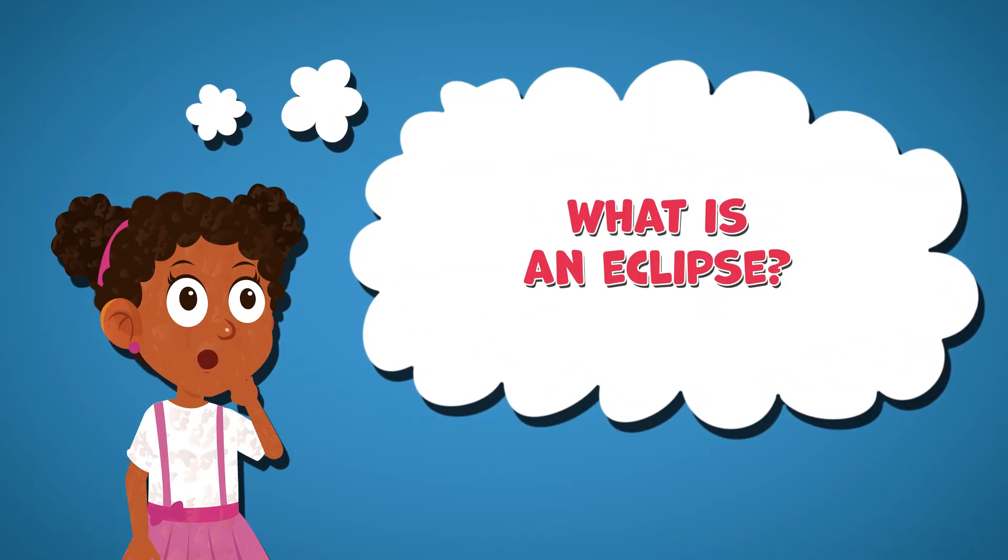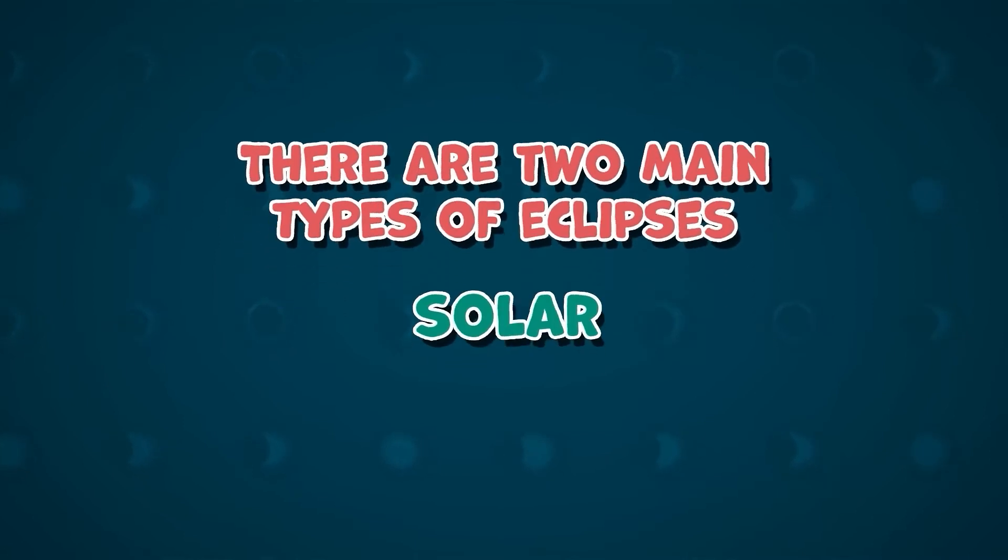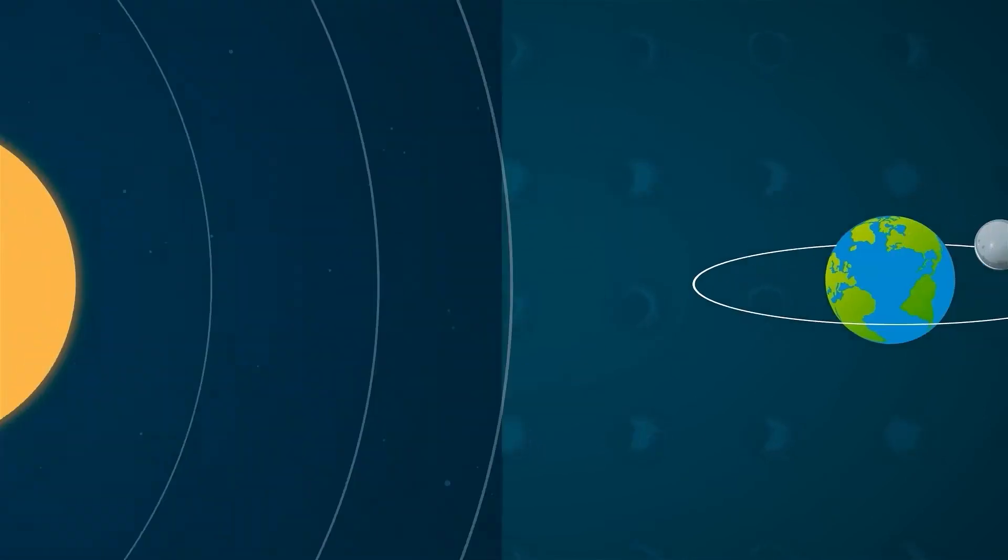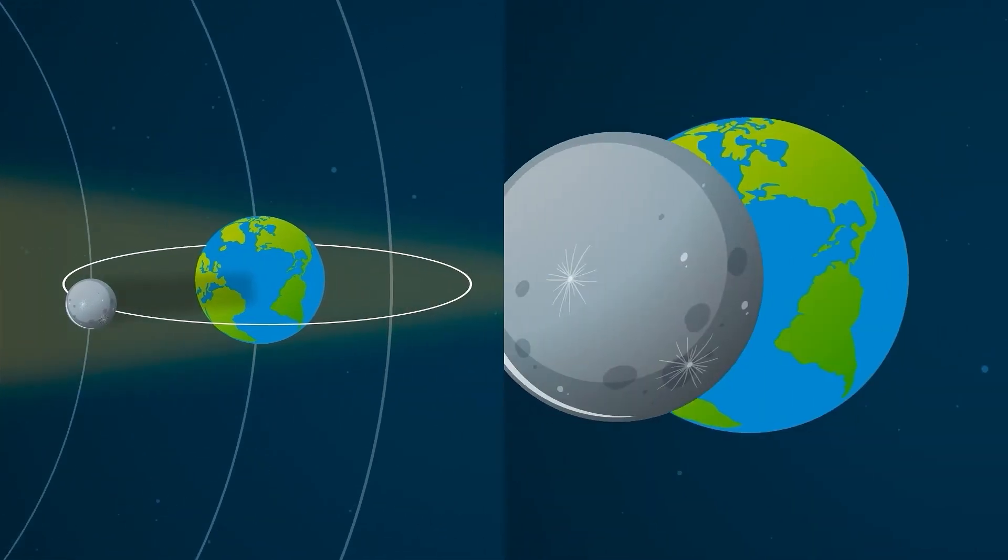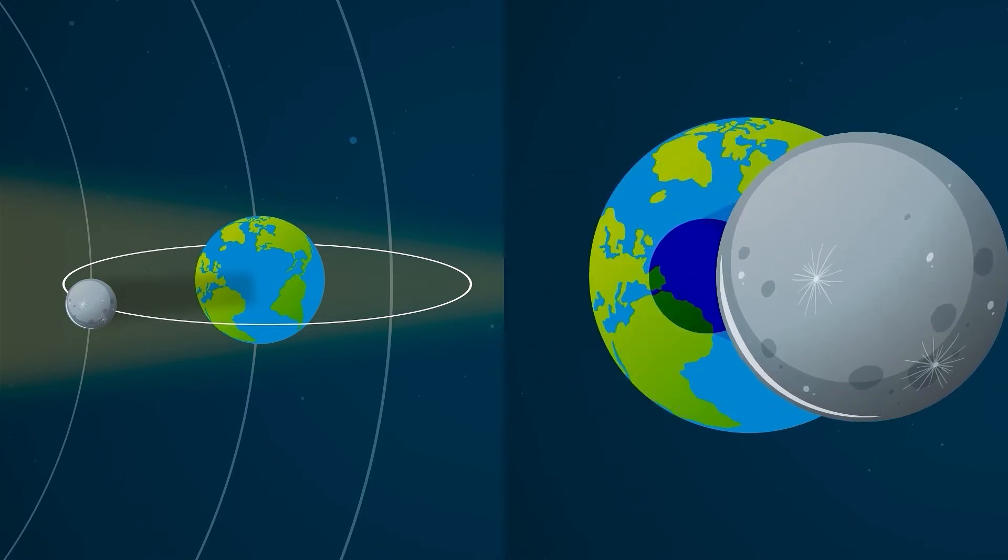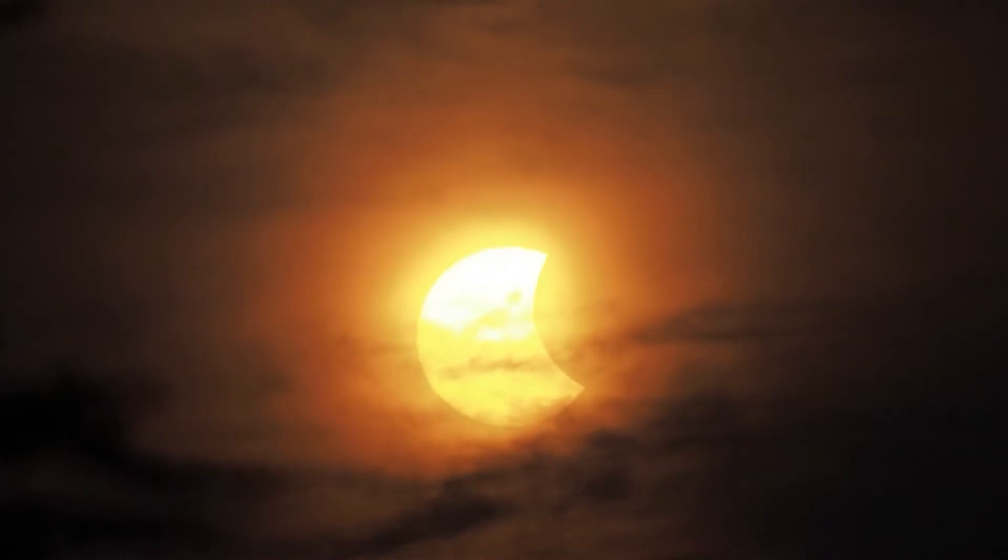There are two main types of eclipses: solar and lunar. A solar eclipse occurs when the moon passes directly between the earth and the sun. The moon blocks the sun's light and casts a shadow over a specific region on earth. This kind of eclipse can make the day seem like night for a brief period.